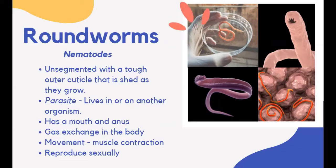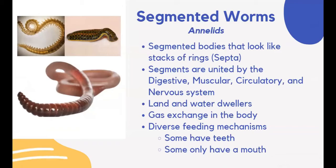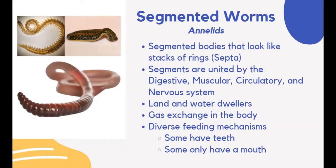Roundworms move by contracting their muscles and thrashing back and forth. Segmented worms, also known as annelids, have segmented bodies that look like stacks of rings. Each segment is divided by septa. The segments are united by the digestive, muscular, circulatory, and nervous systems. Earthworms, leeches, and marine bristle worms are segmented worms. Annelids are land and water dwellers. Many of them are filter feeders — animals that obtain food by filtering organisms from water that passes through them.